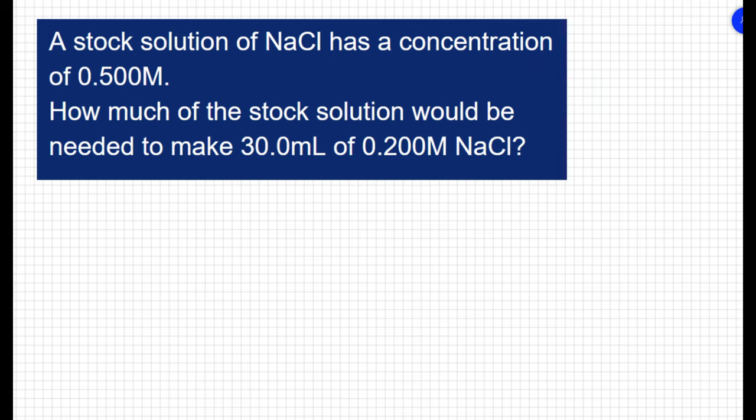In the previous two questions, we were given the initial conditions of our solution and asked for the final. Here, I know my final conditions. I know that I want to end up with 30 milliliters of a 0.2 molar solution, and I'm given an initial concentration. So I need to find an initial volume.